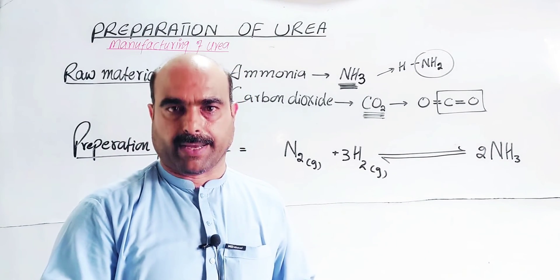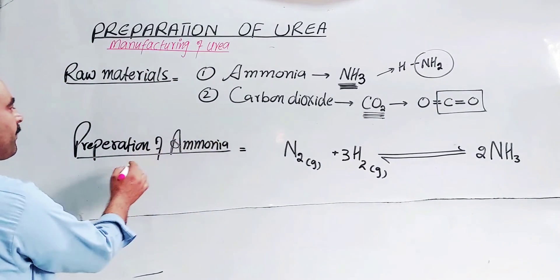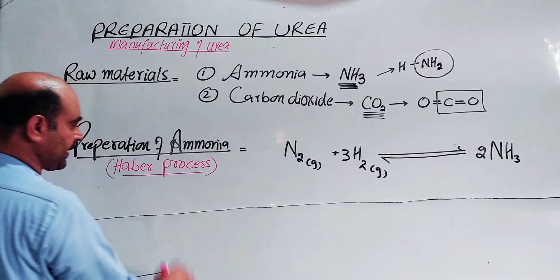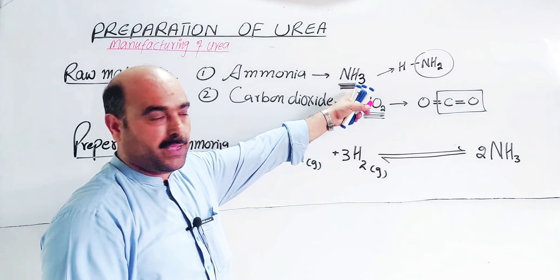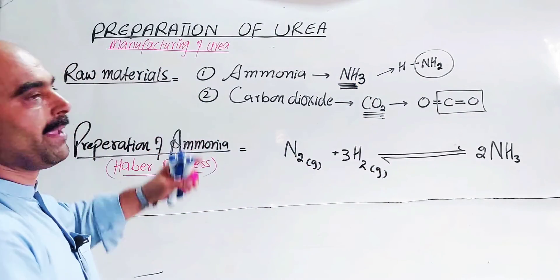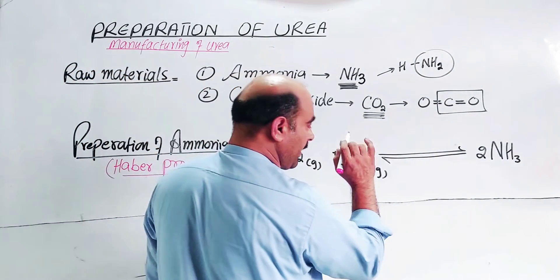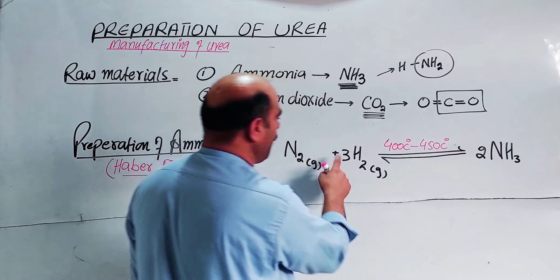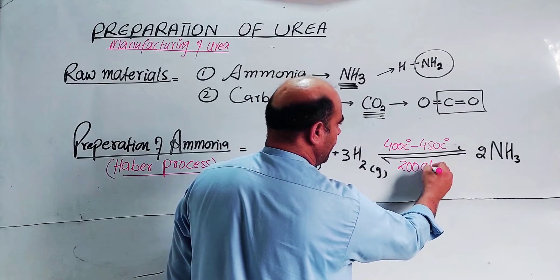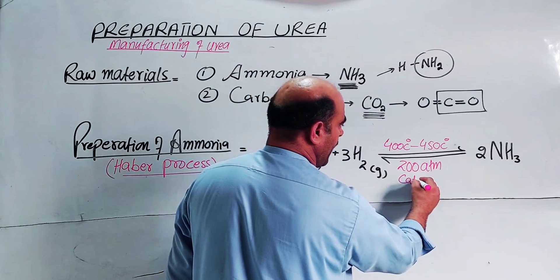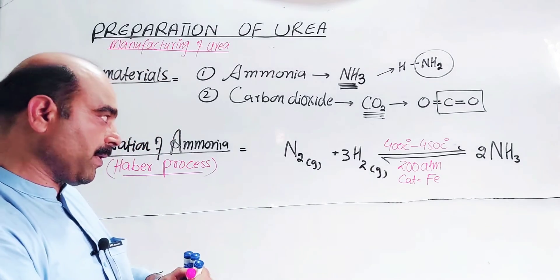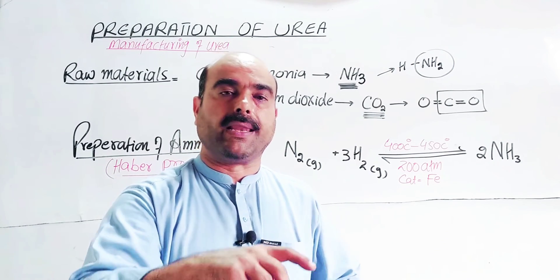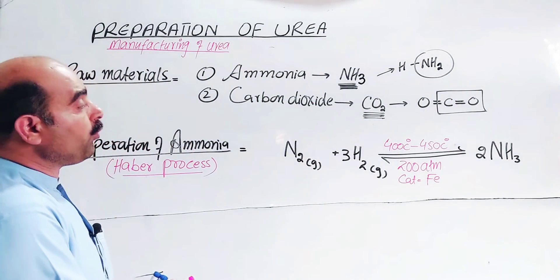This method was devised by Fritz Haber — the Haber process — for the large-scale preparation of ammonia. The raw materials are nitrogen and hydrogen gases. The conditions are: temperature 400°C to 450°C, pressure of 200 atmospheres, and the catalyst is iron. These optimum conditions speed up the reaction and give the maximum amount of product.